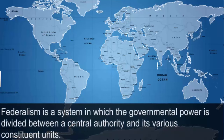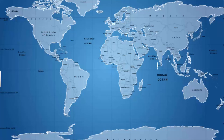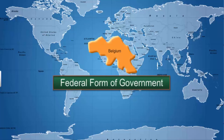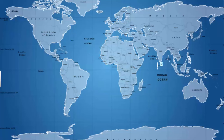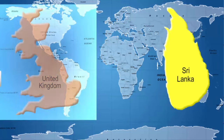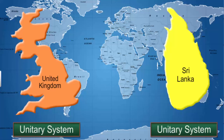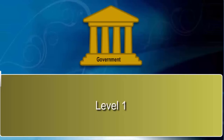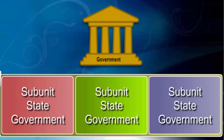Federalism is a system in which governmental power is divided between a central authority and its various constituent units. For example, Belgium has a federal form of government, whereas countries like Sri Lanka and the UK have a unitary system of government. Under a unitary system, there is only one level of government. There may be sub-units like state governments, but they are under the absolute subordination of the central government.